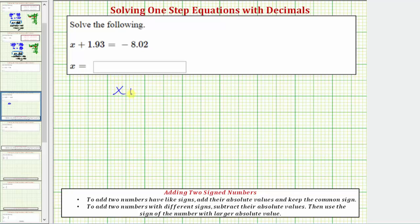We want to solve the equation x plus 1.93 equals negative 8.02. We can also read this equation as x plus 1 and 93 hundredths equals negative 8 and 2 hundredths.